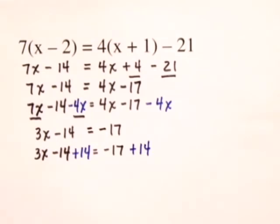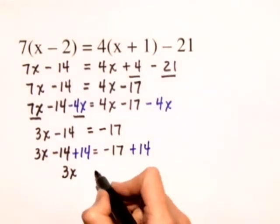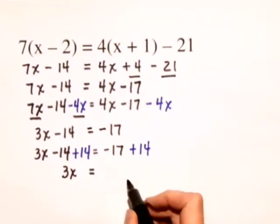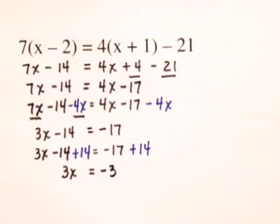On the left-hand side, we'll just have 3x, the minus 14 plus 14 adds to 0, equals, on the right-hand side, negative 17 plus 14 is negative 3.